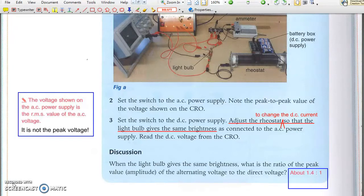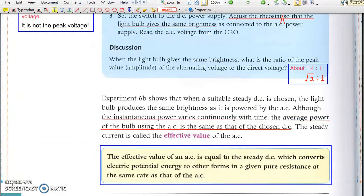Indeed, it should be root 2 to 1. In other words, an AC of peak value of 5 root 2 volts will give the same brightness as a steady DC of voltage 5 volts.